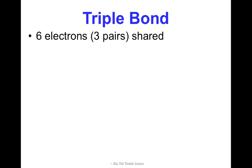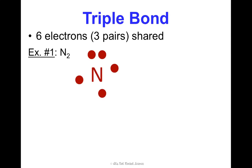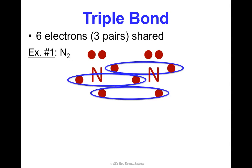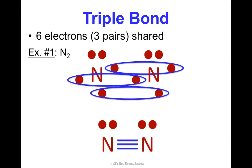Triple bond: six electrons, or three pairs, are shared. Example — nitrogen gas, N₂, which makes up over three quarters of the atmosphere. You've got nitrogen and nitrogen. Those will share, those will share, and those will share. I end up with my nitrogens having three bonds — 2, 4, 6 electrons between them — and they both have access to 8.